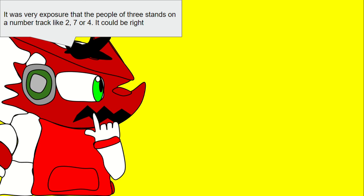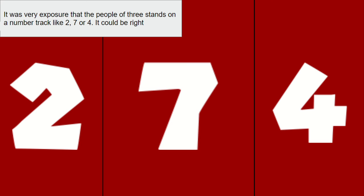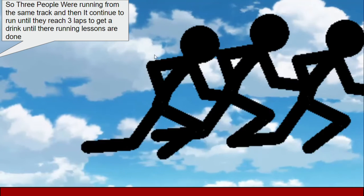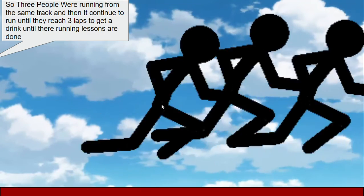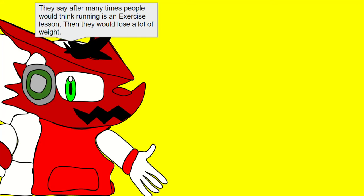It was very exposure that the people of 3 stand on a number track like 2, 7, or 4. It could be right! So 3 people were running from the same track and then it continues to run until they reach 3 laps to get a drink until their running lessons are done.